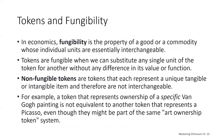So let's talk about tokens and fungibility. In economics, fungibility is a property of a good or commodity whose individual units are essentially interchangeable. Tokens are fungible when we can substitute any single unit of the token for another without any difference in its value or function. Strictly speaking, if a token's historical provenance can be tracked, then it's not entirely fungible because you can tell the difference between the two.